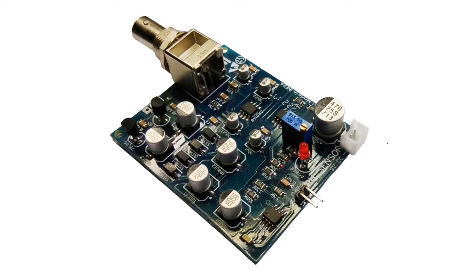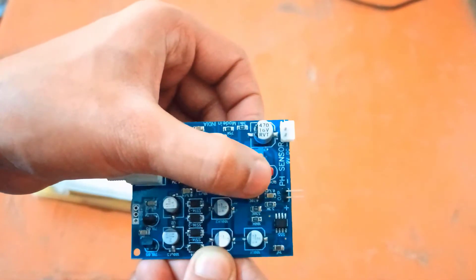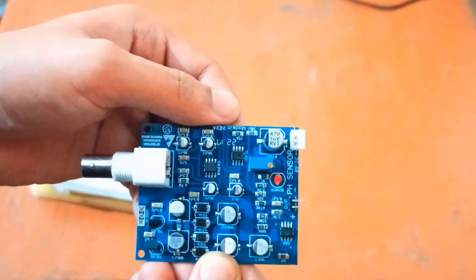This instrument is calibrated for the pH sensor provided along with this kit. If there is wrong reading, you may need to adjust this for recalibration. This is the power LED that turns on when the power is applied to it.